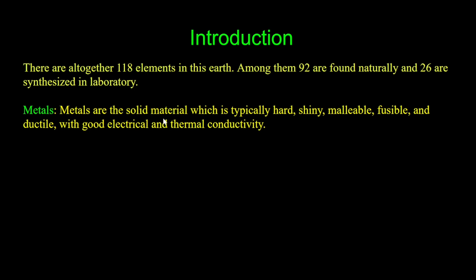Metals are solid, hard, shiny, malleable, and fusible. When metals are mixed together they form alloys. Examples of alloys include brass and bronze. Metals are also ductile and have good electrical and thermal conductivity.